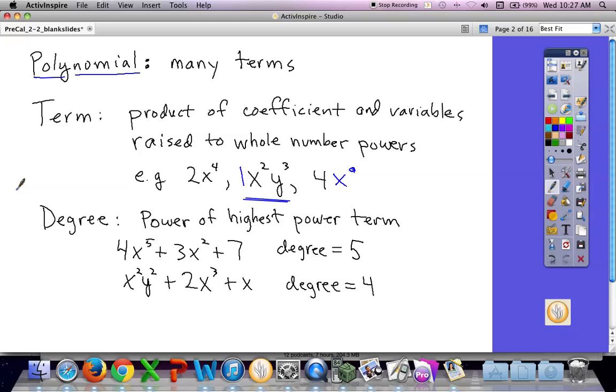When we talk about the degree of a polynomial, what we're saying is the highest power term. When you talk about the degree, you talk about the highest power term. So like in this one here, 4x to the 5th is the highest power term, so you would say the degree is 5.